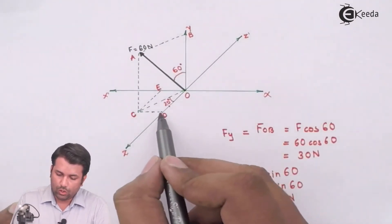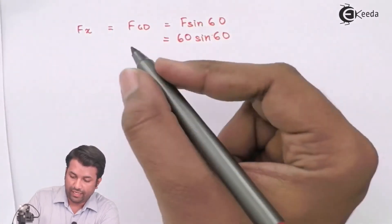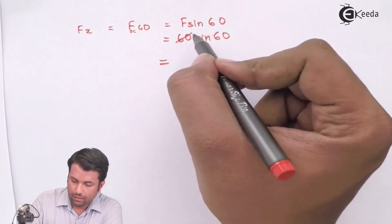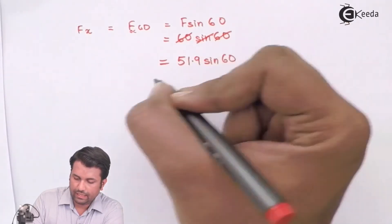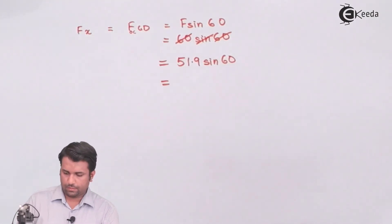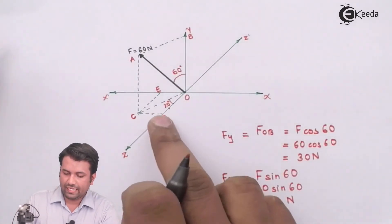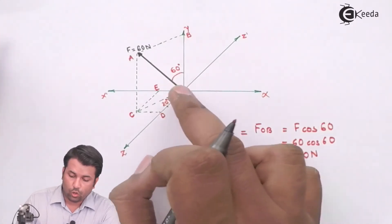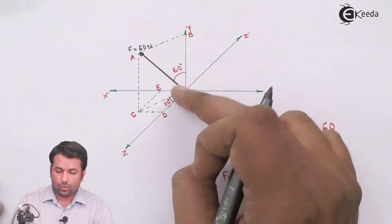I'm finding the force along CD but taking the component of force OC, so I need to use the magnitude of OC. So: F_x = F_OC × sin(angle) = 51.9 × sin(angle), which comes out to be 45 Newtons. So CD, which is the x-component of this force along the x-axis, is 45 Newtons.